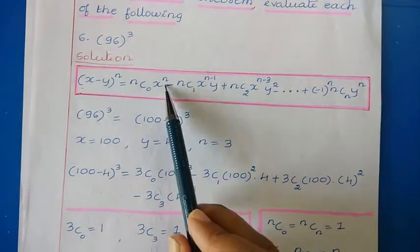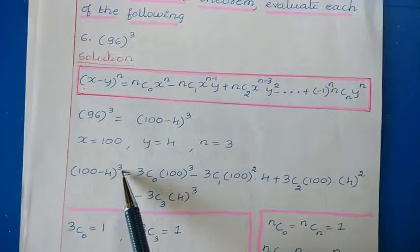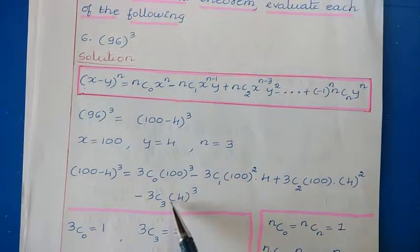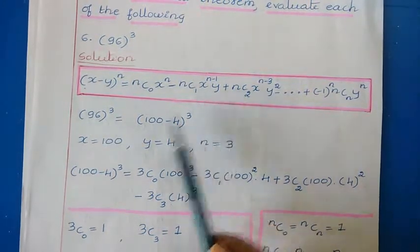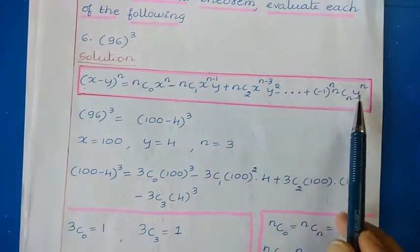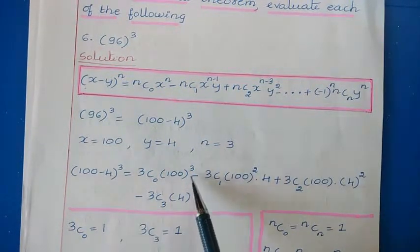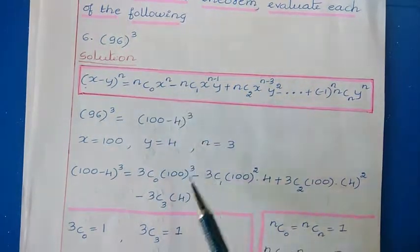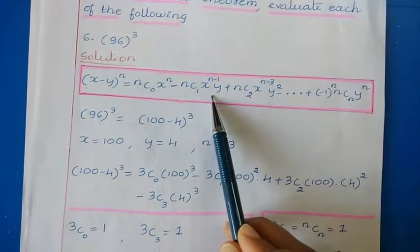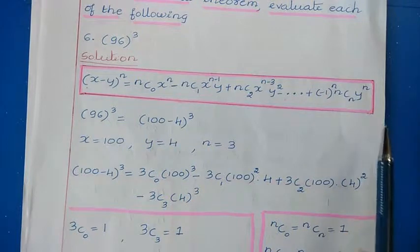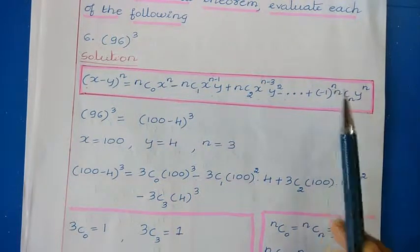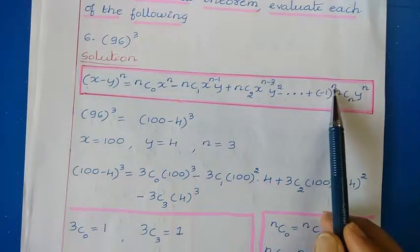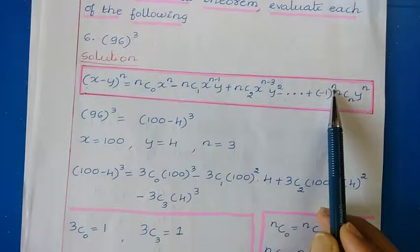The x value power is decreasing, starting from n which is 3: 100 to the power 3, 100 squared, 100, and 100 to the power 0 which is 1. The second variable 4 has increasing power: 4 to the power 0, 4, 4 squared, and 4 cubed. Since we have a negative sign, the signs alternate: first term positive, second negative, third positive, fourth negative. With n equal to 3 (odd), the last term is negative.